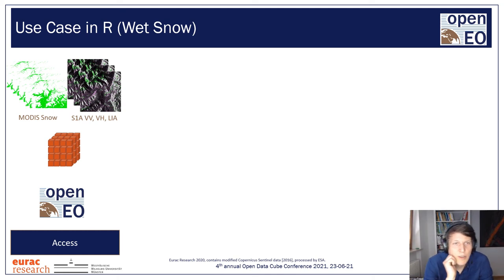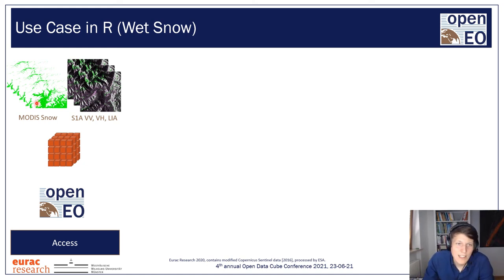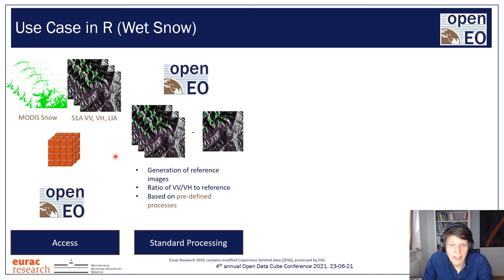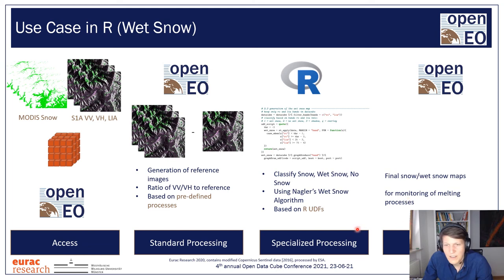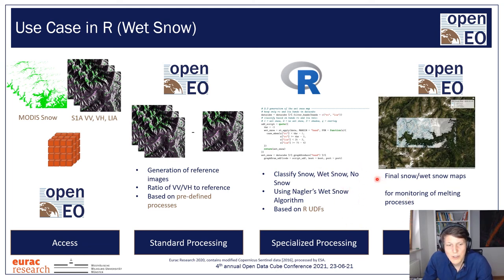How can OpenEO be used in a real-world application? For example, the mapping of wet snow using SAR data. We access two existing datasets: a time series of Sentinel-1 data and existing snow maps derived from MODIS, both available through OpenEO in our data cube. We apply standard formulas to prepare the data — generating reference images and subtracting them to normalize. Then we pipe in more specific code as a UDF, defined in a different programming language such as R. Finally, we process everything and get a time series of wet snow maps for a valley in South Tyrol.